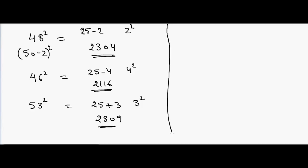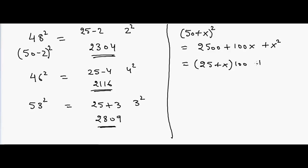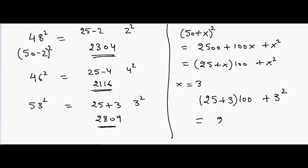How does this trick work? Any number close to 50 can be written as 50 plus x, squared. That expands to 2500 plus 100x plus x squared, which equals (25 plus x) times 100 plus x squared. So for x equals 3, we add 25 plus 3 and then add 3 squared — giving 2809. This trick is based on the (a+b)² identity. I hope this helps — see you in the next trick!